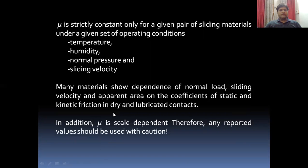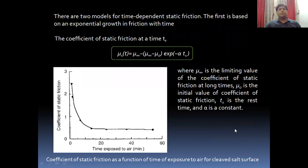One important thing is that μ is scale dependent, so we have to use it very cautiously. There are two models for time-dependent static friction. The first is based on exponential growth, where the coefficient of static friction at time t is given by an equation where μ∞ is the limiting value of the coefficient of static friction and μ₀ is the initial value of the coefficient of friction. We can see the variation in this graph.